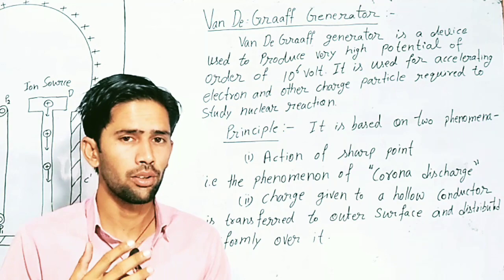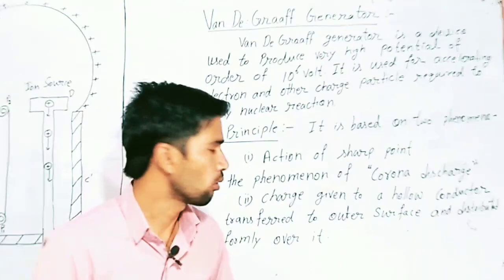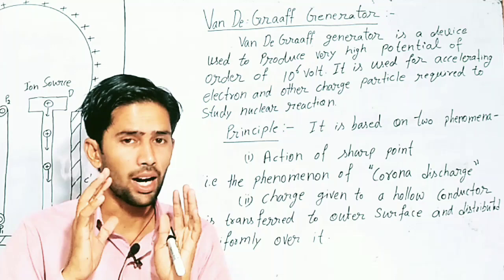Van de Graaff generator is a device that works on two principles. First, action of sharp point and what is the phenomenon of corona discharge. When there is high potential, the charge particles will be discharged.